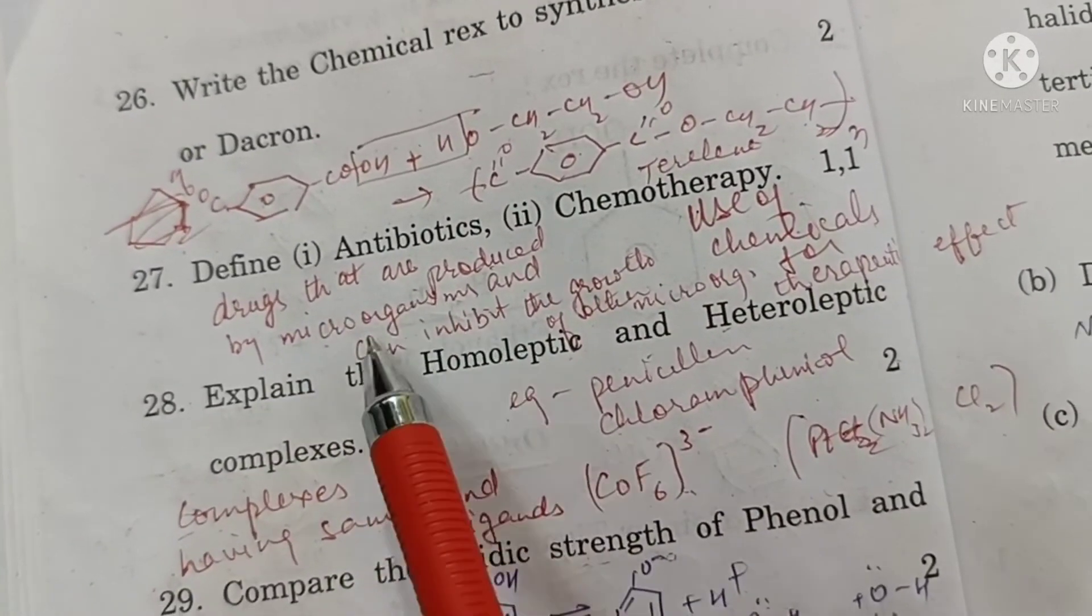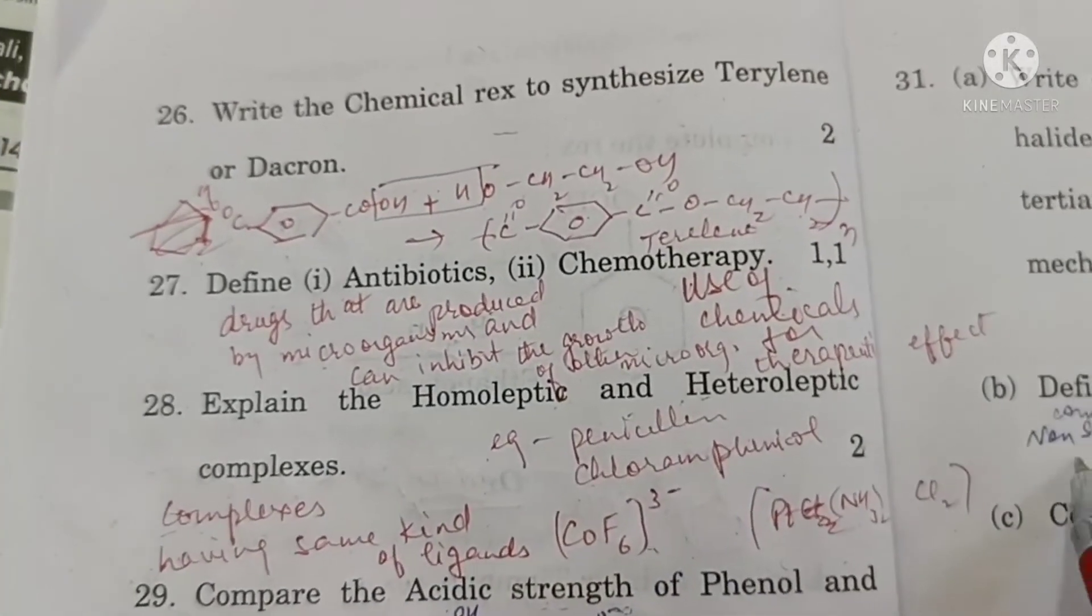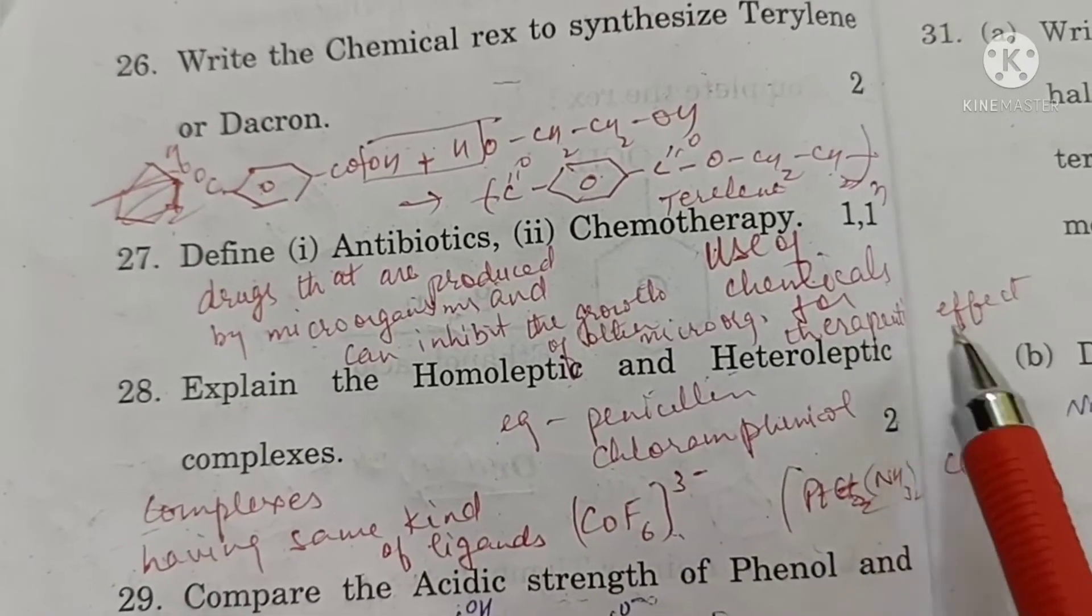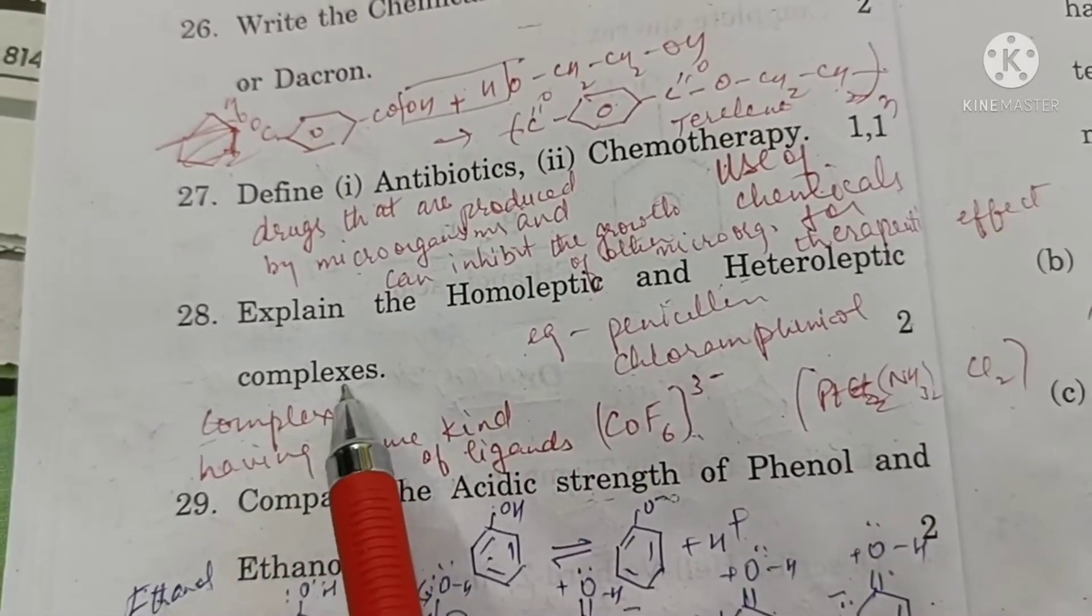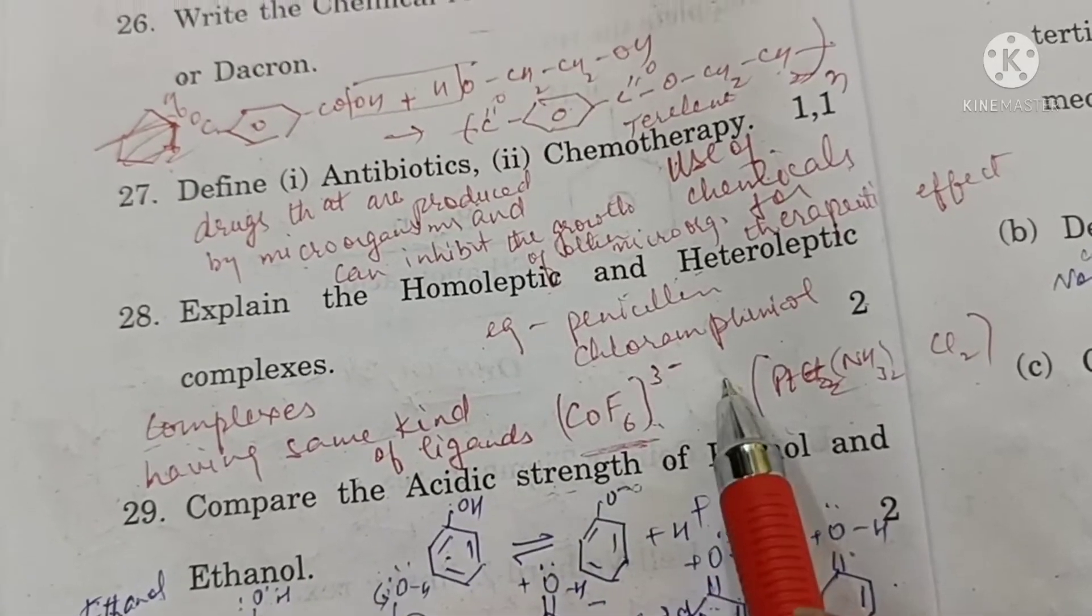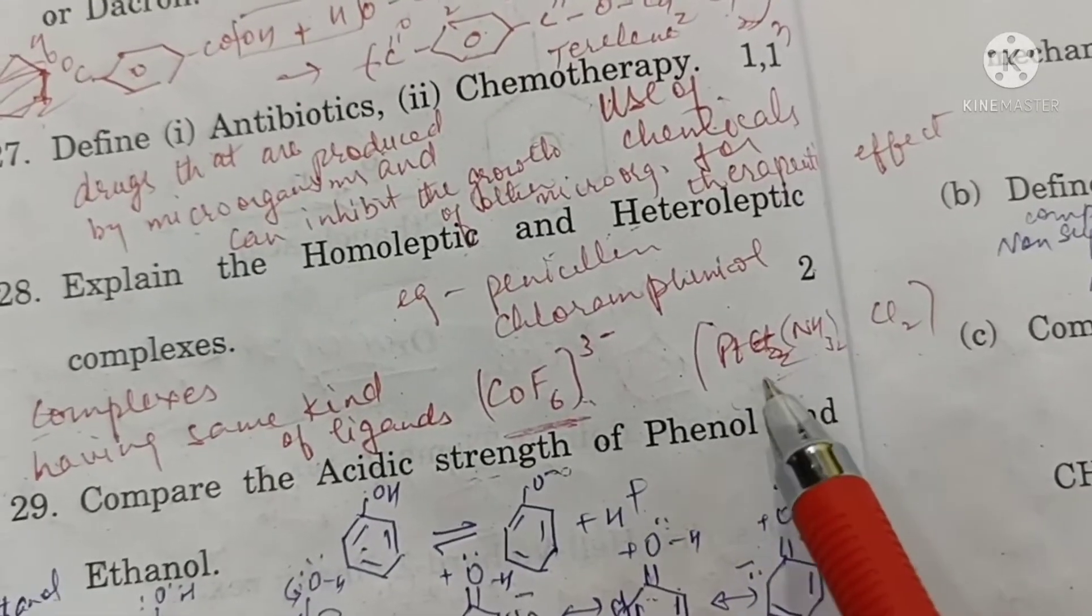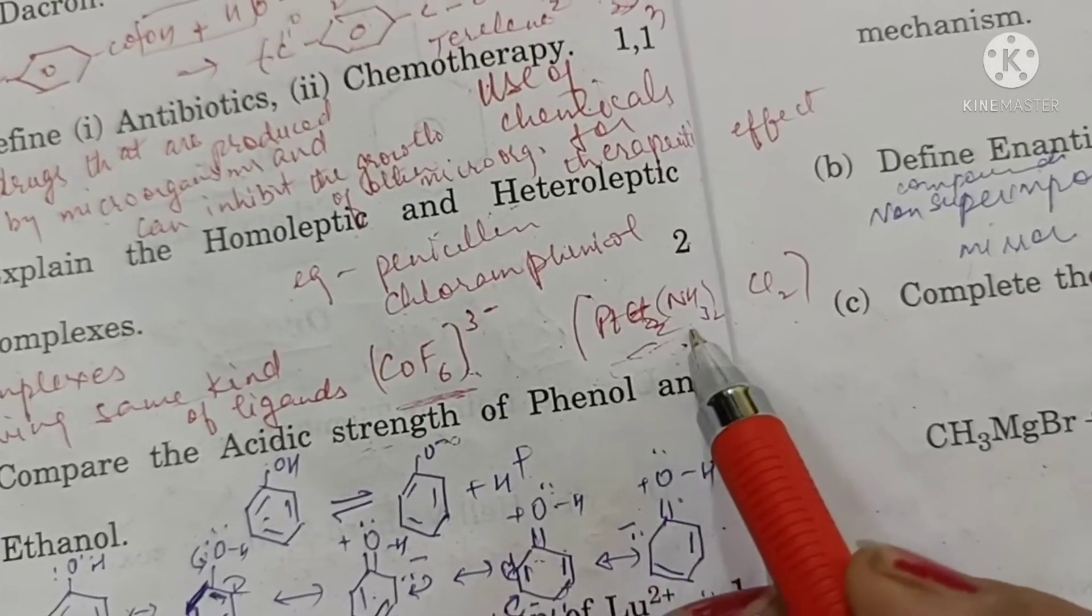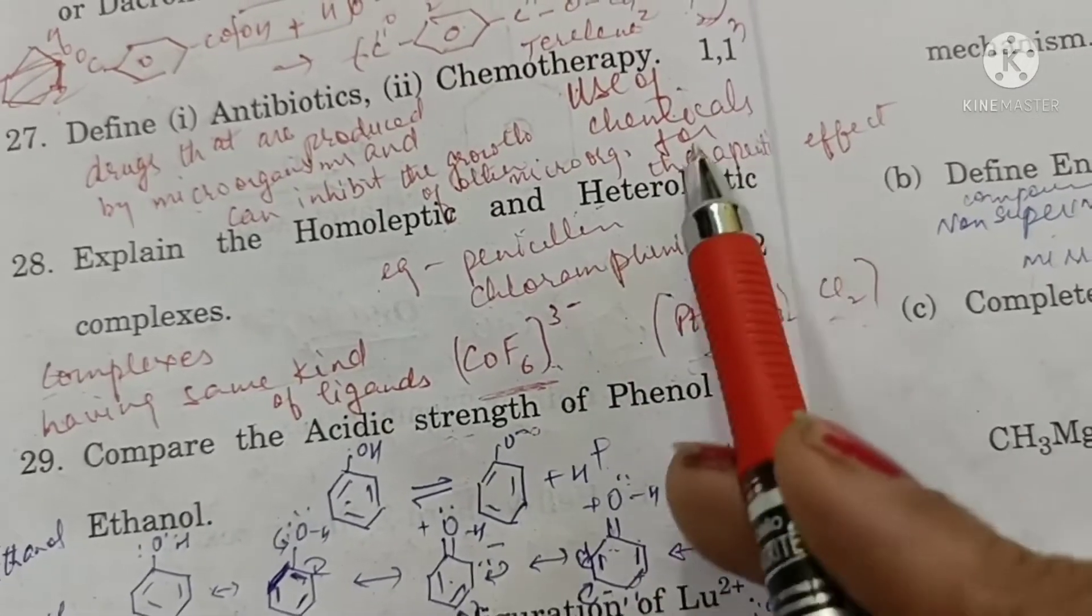Antibiotics are drugs that are produced by microorganisms and can inhibit the growth of disease-causing microorganisms. Chemotherapy is the use of chemicals for therapeutic use and for treatment of diseases. Homoleptic complexes are those complexes which contain the same kind of ligands, for example hexafluoridocobaltate, and heteroleptic complexes are those which contain different ligands. In diamine dichloridoplatinum, there are two ammonia ligands and two chloride. They are different. So, it is heteroleptic complex.